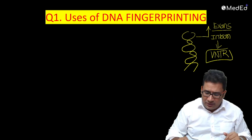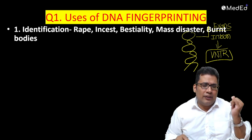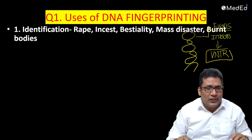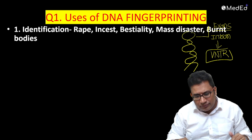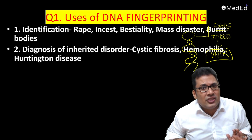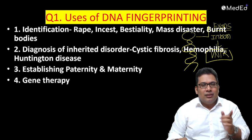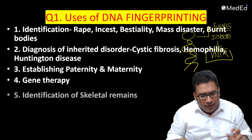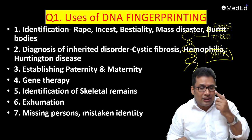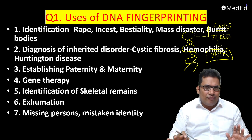What are the uses? Uses can be medical or medico-legal. One common use is identification - identification in cases of rape, incest, bestiality, mass disaster, and burnt bodies. Diagnosis of some inherited disorders like cystic fibrosis, haemophilia, and Huntington's disease. Establishing paternity and maternity. Gene therapy, medical indication, skeletal remains, exhumation, missing persons, and mistaken identity - all these are indications.